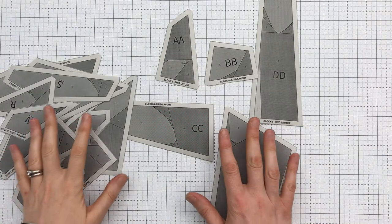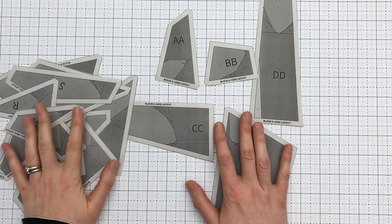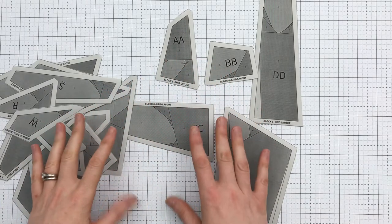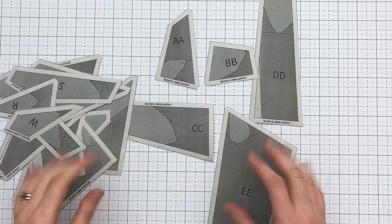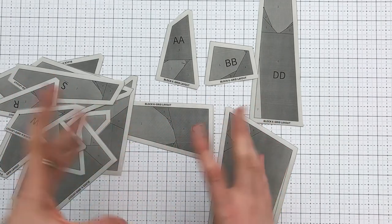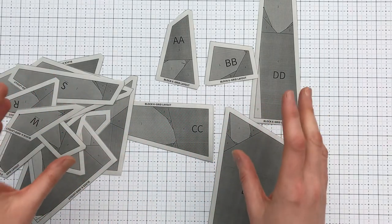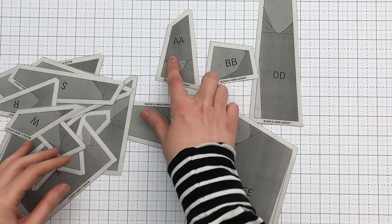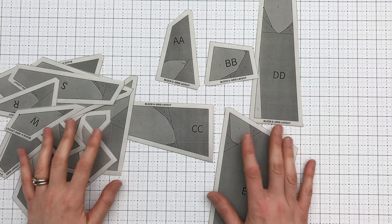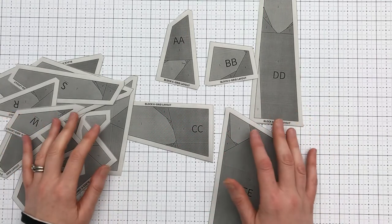This month's block has a good number of paper pieces, but the good news is most only have a few sections, so it'll go fairly quickly. You'll notice for the grid block, the pieces I have here, I ran out of letters, so some of the paper pieces are labeled double letters like AA, BB, and so on. Just refer to the diagrams in the pattern and you'll understand.